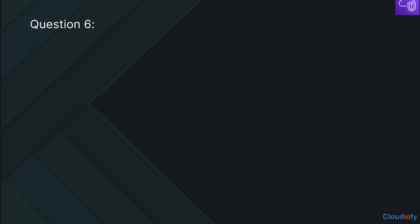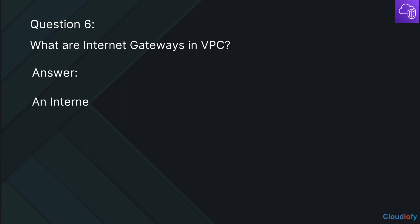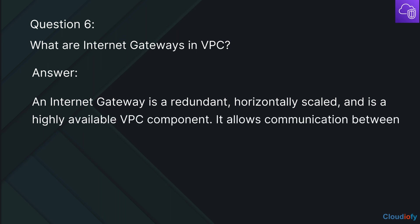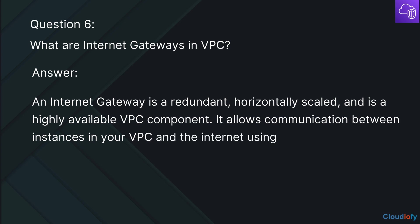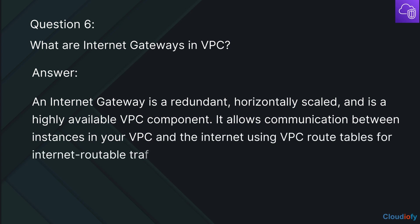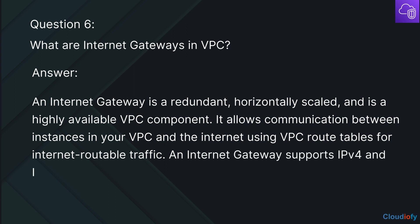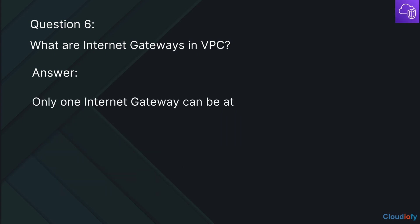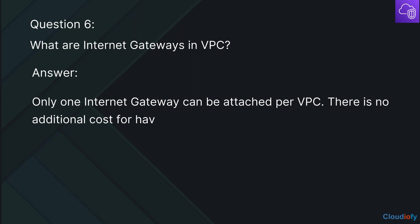The next question is: What are internet gateways in VPC? An internet gateway is a redundant, horizontally scaled, and highly available VPC component. It allows communication between instances in your VPC and the internet using VPC route tables for internet-routable traffic. An internet gateway supports IPv4 and IPv6 traffic and does not cause availability risks or bandwidth constraints on your network traffic. Only one internet gateway can be attached per VPC, and there is no additional cost for having an internet gateway in your account.